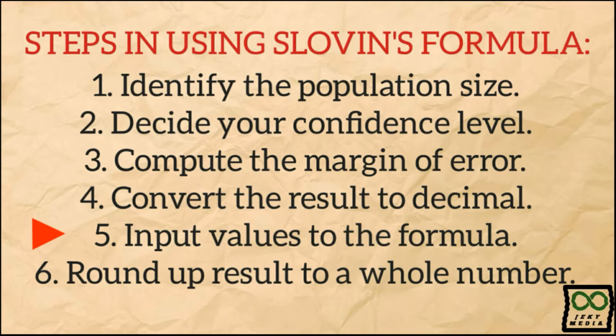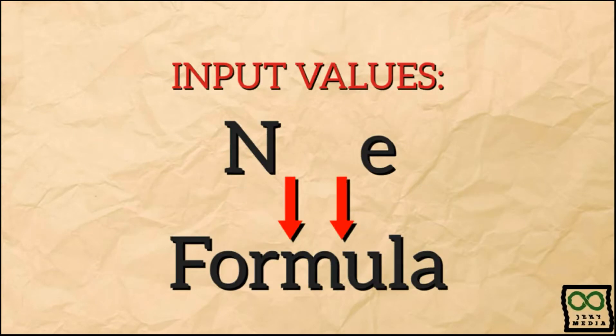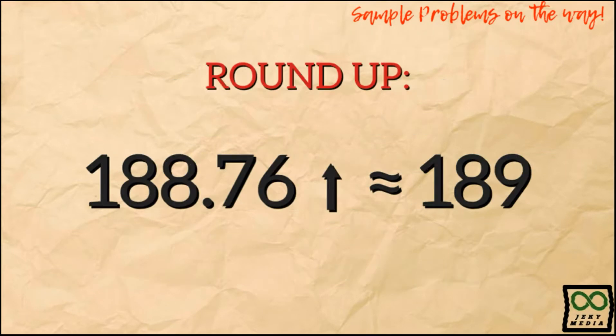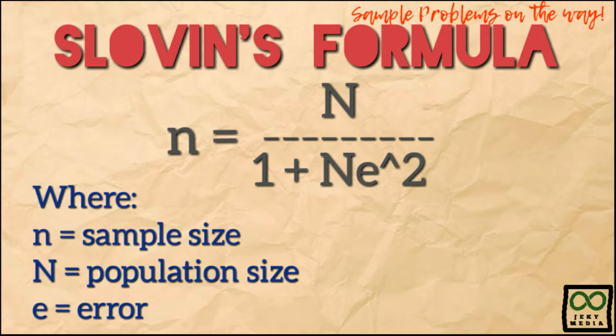Number 5, input values to the Slovin's formula. Input population size and margin of error. Number 6, round up the answer to the nearest whole number. For example, 188.76 is rounded up to 189. Again, here is the Slovin's formula.